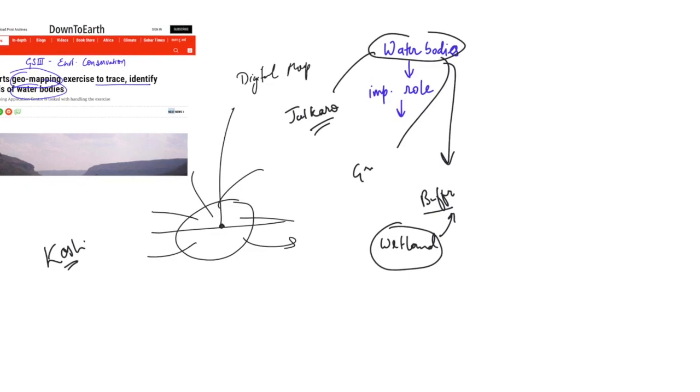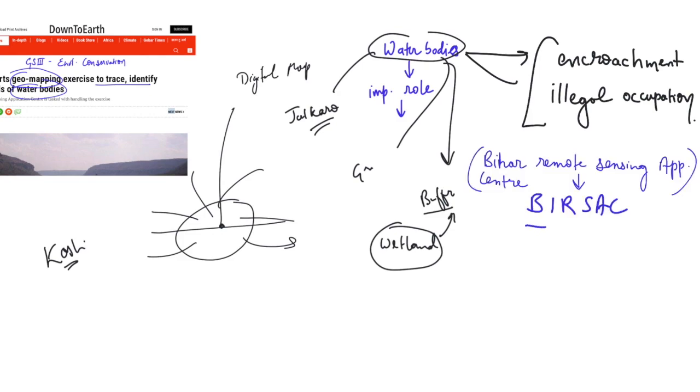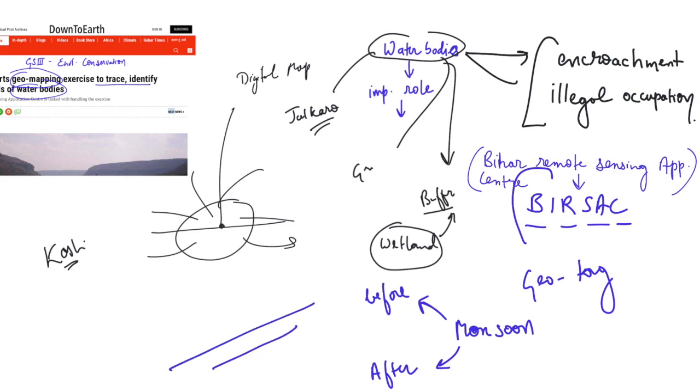However, into the recent years, the water bodies have nearly disappeared because of the process of encroachment and illegal occupations. And these phenomena go unnoticed because simply there is no mechanism to monitor the water bodies into the real-time basis. But now, Bihar Remote Sensing Application Centre has been given a task that they will geo-tag all the water bodies. Now this will be an annual exercise and every year before the monsoon and after the monsoon, the water bodies will be tagged. So this is an excellent initiative with respect to the conservation and the states should learn from Bihar in this particular direction.